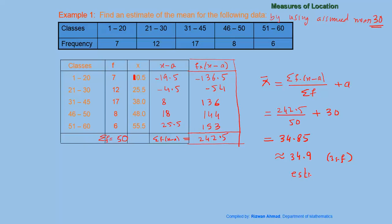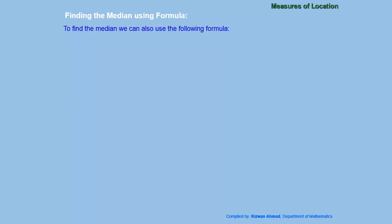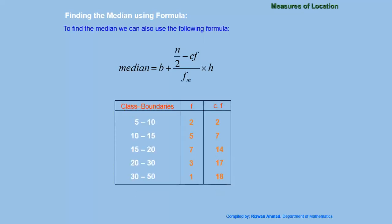This is an estimate because it is grouped data and we don't have the original data — that's why the question says 'find an estimate of the mean using the assumed mean method.' Now we will find the median using a formula for grouped data. With an example this will be clearer. We have class boundaries, frequencies, and cumulative frequencies already found, and we need to find the median using the formula.